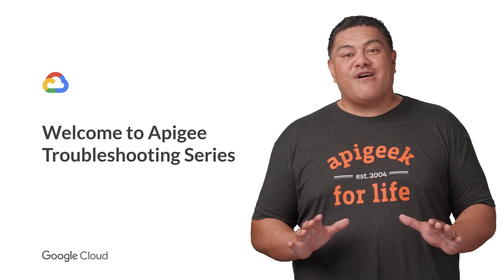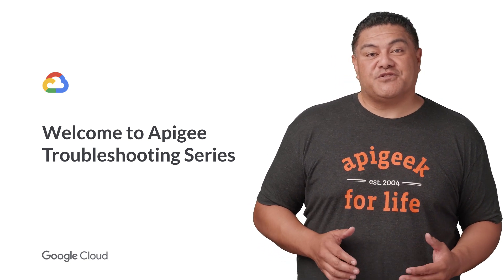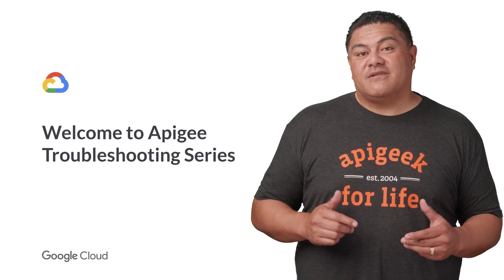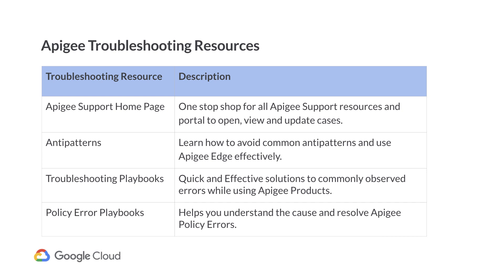Don't get me wrong — while we absolutely love the opportunity to partner with you to solve issues, we believe that the shortest path to resolution is customer enablement wherever applicable. Towards that end, we have been making information around anti-patterns and troubleshooting available to all of our customers. You may already be aware of these, but I'd like to take this opportunity to point you to some of the key resources that we have created.